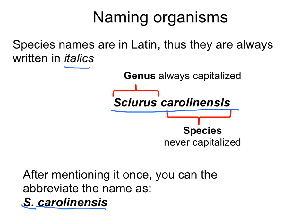Another example of using this species name is when we say E. coli — we're talking about the bacteria E. coli. The 'E' is the abbreviation for the genus Escherichia, and 'coli' is the actual species. We have to use both in order to refer to that particular type of bacteria.